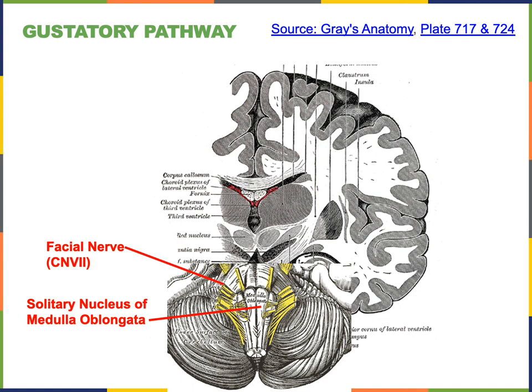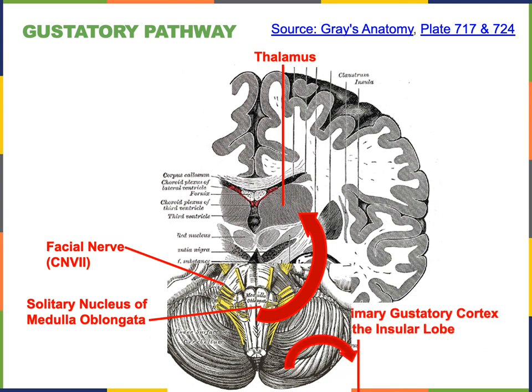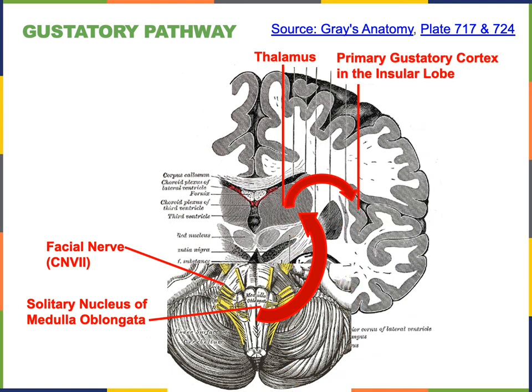Then neurons in the medulla oblongata will relay information to the thalamus, and neurons in the thalamus will relay information to the primary gustatory cortex in the insular lobe of the cerebral cortex, where the perception of taste will be processed.